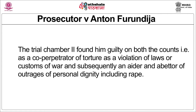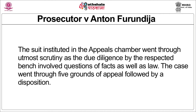The suit in the Appeals Chamber went through utmost scrutiny, as the due diligence by the bench involved questions of both fact and law. The Trial Chamber is traditionally tasked with being the finder of fact and the Appeals Chamber the finder of law. This case went through five grounds of appeal followed by a disposition. The grounds of appeal included allegations that Furundzija was denied a fair trial, that the conviction lacked concrete evidence, that one of the judges had fulfilled grounds for disqualification, and that the sentence imposed was excessive.